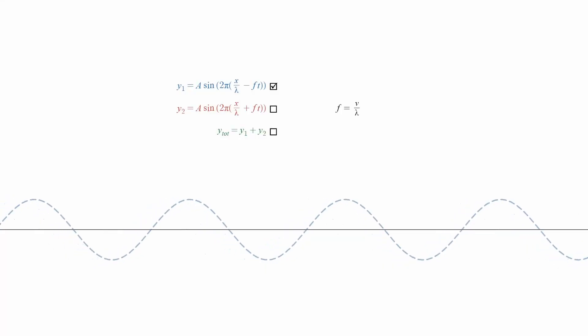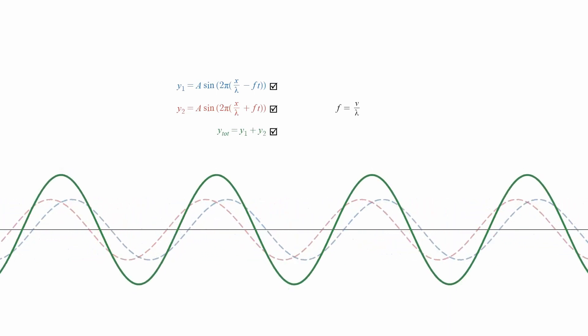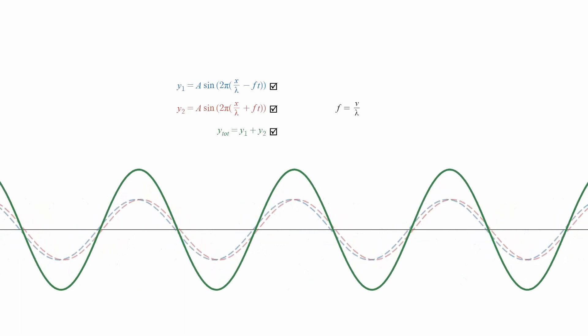The standing waves appearing on a guitar string are the result of the superposition of several waves whose frequency and amplitude are identical, but moving in opposite directions.